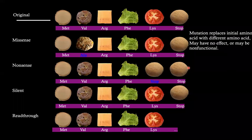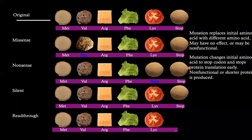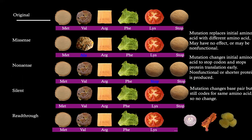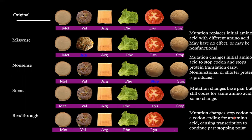To summarize: a missense mutation replaces the initial amino acid with a different amino acid — it may have no effect or it may be non-functional. A nonsense mutation changes the initial amino acid to a stop codon and stops protein translation early, producing a non-functional or shorter protein. A silent mutation changes the base pair but still codes for the same amino acid, so we see no change. A read-through mutation changes the stop codon to a codon coding for an amino acid, causing translation to continue past the stopping point.